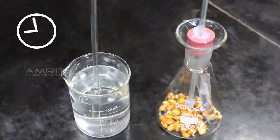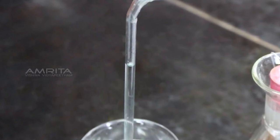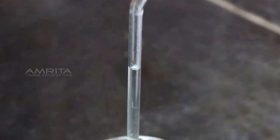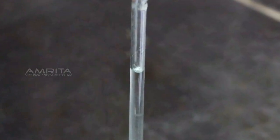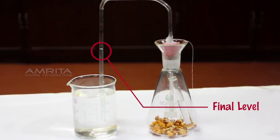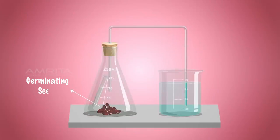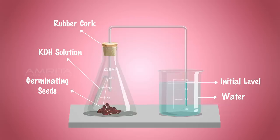Keep the apparatus undisturbed for 2 hours. After 2 hours, you will see that the level of water has risen in the delivery tube at the end dipped in the beaker of water. Note this level as the final level. The germinating seeds in the conical flask release carbon dioxide during respiration, which is absorbed by the potassium hydroxide solution kept in the small test tube. This creates a partial vacuum in the flask and it forces the water up the delivery tube. Thus, it proves that germinating seeds produce carbon dioxide during respiration.